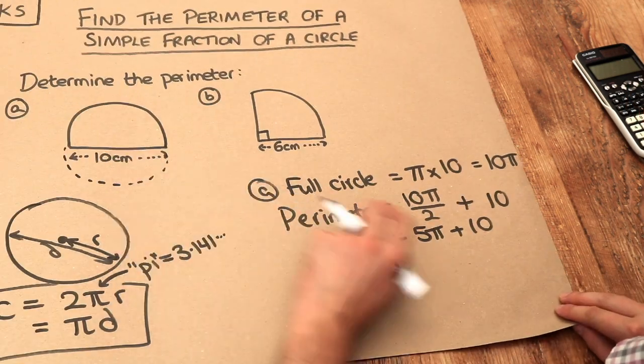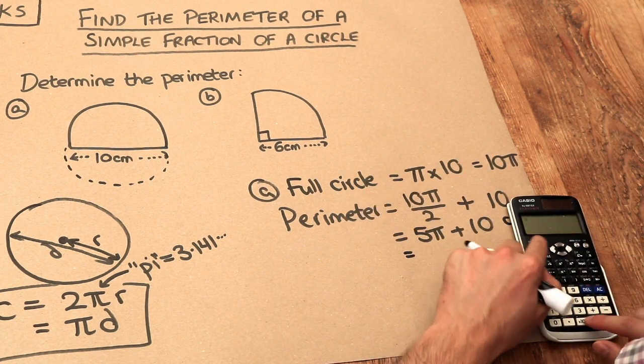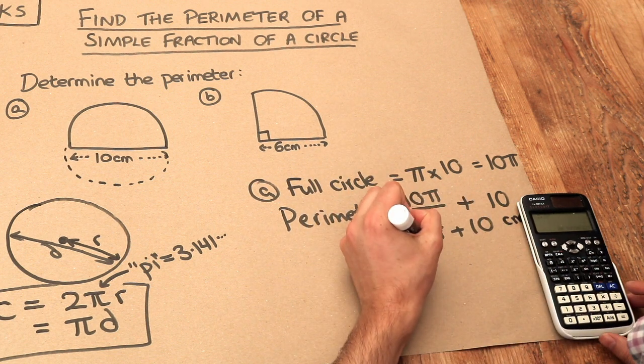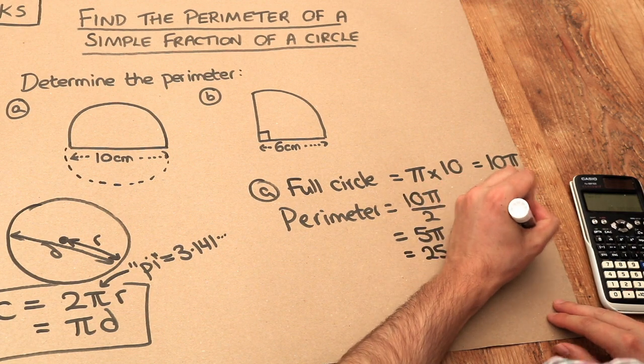So we've got this and we need our unit of centimetres. And we could put this in our calculator, so 5 pi plus 10. You don't need to write the times symbol. And that gives you 25.7 centimetres to three significant figures.